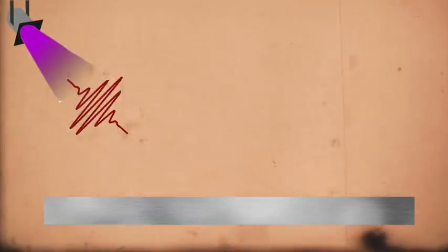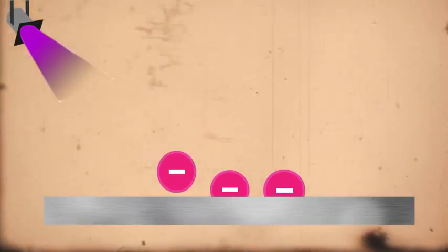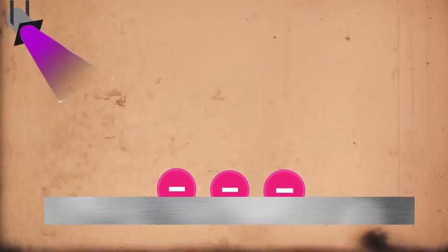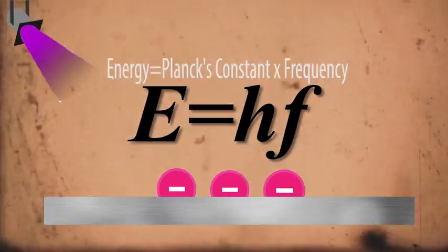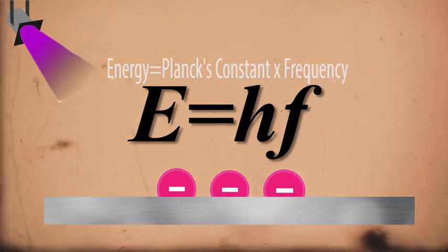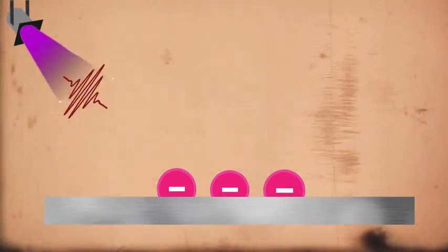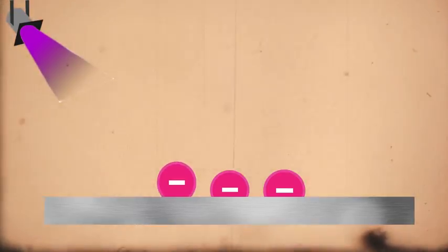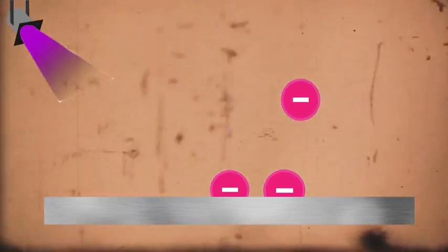When the light strikes the photoemissive surface, the energy of the photon is passed on to an electron. By using Planck's relation, we know that energy is proportional to the frequency of a photon. A high frequency source of light will have more energy, causing an electron to gain sufficient kinetic energy to escape the atomic lattice.